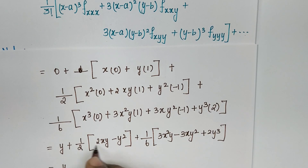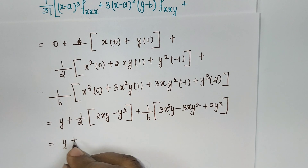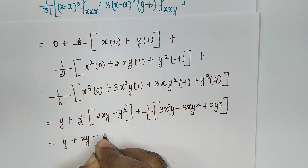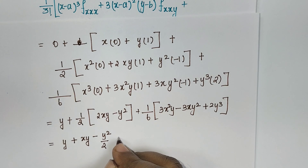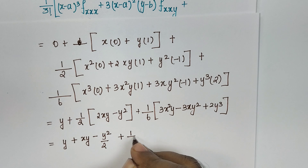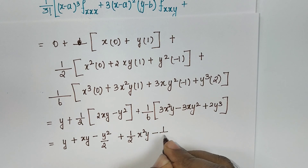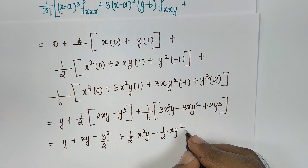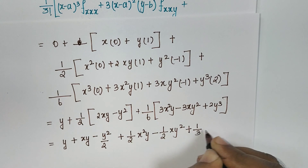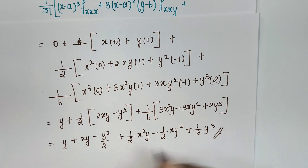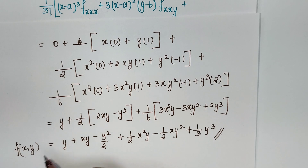Simplifying the full expression: f(x, y) = y + xy − y²/2 + (1/2)x²y − (1/2)xy² + (1/3)y³. This is the final answer for this problem.